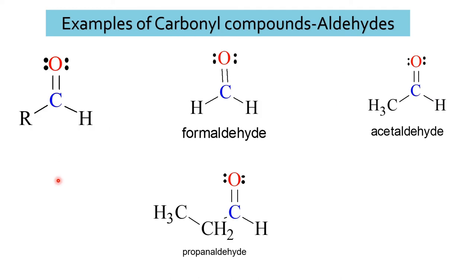These are some examples of carbonyl compounds that come under aldehydes. This is the general structure of aldehydes, where R may be hydrogen, an alkyl group, or an aryl group. This is formaldehyde, where the carbonyl group is attached to two hydrogen atoms. This example is acetaldehyde, where the carbonyl group is attached to an alkyl group on one side and hydrogen on the other. In an aldehyde, at least one hydrogen must be attached to the carbonyl group. This is propanaldehyde, in which hydrogen is attached to the carbonyl group, with an ethyl group on the other side.